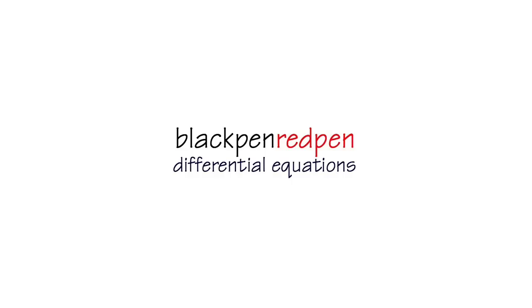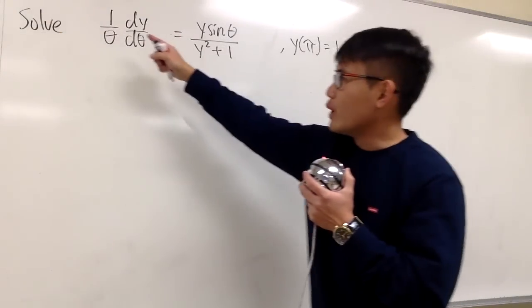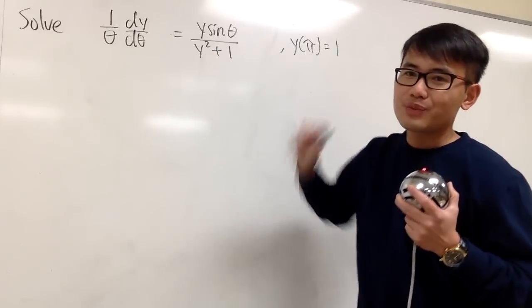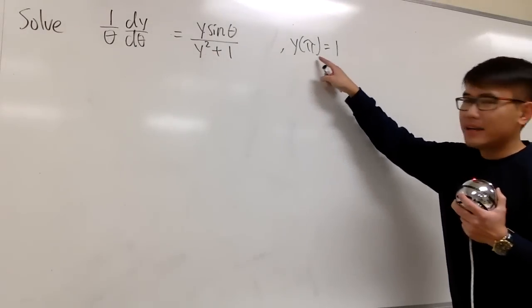Black pen, red pen, yay! Let's solve this differential equation. We have 1 over theta times dy/dθ is equal to y times sine theta over y squared plus 1. And we also know that y of pi is equal to 1.